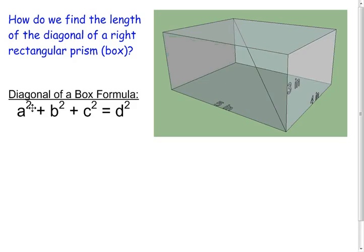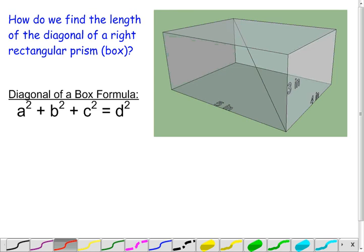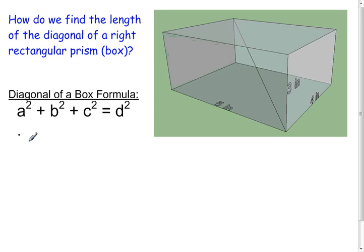Okay, so the formula is a² + b² + c² = d². It's just like the Pythagorean theorem, but instead of a² + b² = c², we have that third dimension, and we call it a² + b² + c² = d².